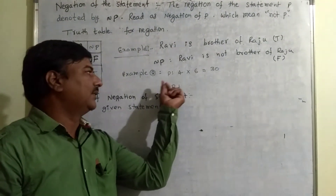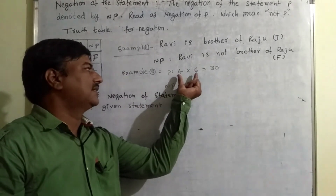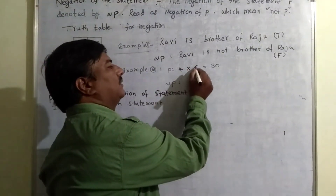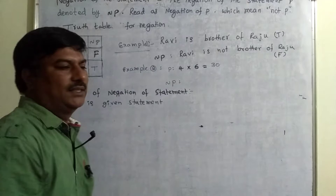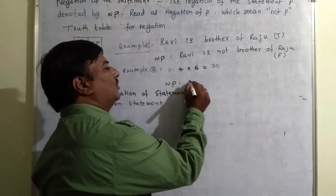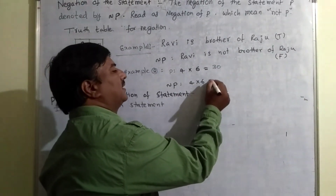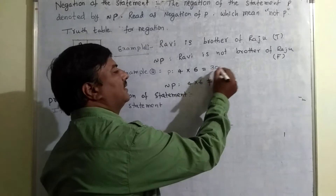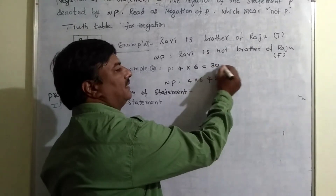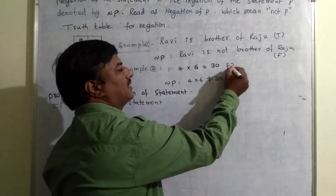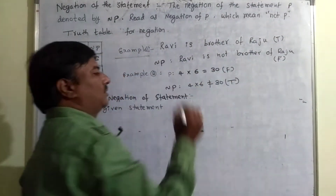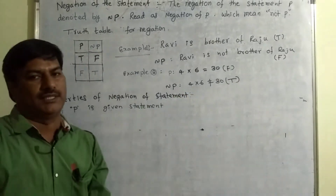The second example: P is the mathematical statement '4 into 6 is equals to 30.' The negation of P is '4 into 6 is not equals to 30.' Since 4 times 6 is 24, the original statement is false. Therefore, the negation of this false statement is automatically a true statement.